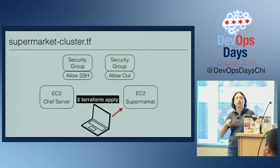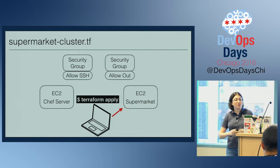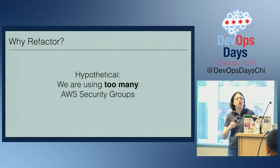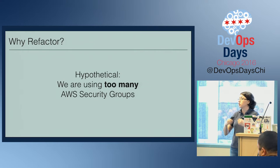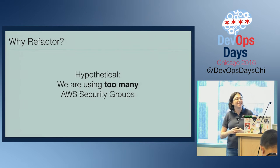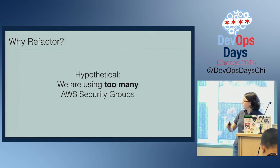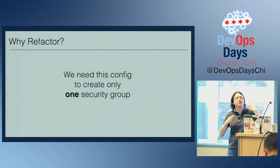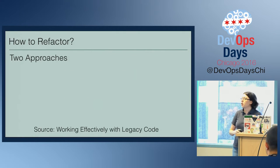The whole point of this config — and spoiler alert, the one we're going to be refactoring is one I wrote, my first Terraform config — is to spin up a complete cluster for development and testing for Chef supermarket. Our hypothetical is that management says we're using too many AWS security groups in our VPCs. The default limit for a VPC is 500 security groups, and our company does not want to increase it. So we need to change this config to recreate only one security group rather than two. That's the why of why we need to refactor.